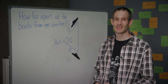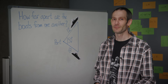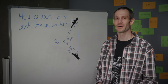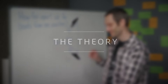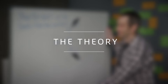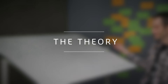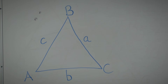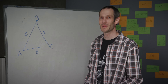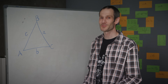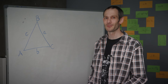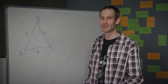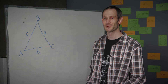Situations such as these can be solved by using the cosine rule. We use the cosine rule when we're given either three sides of a triangle and no angles, or two sides of the triangle and the angle enclosed between the two.